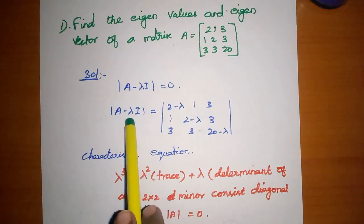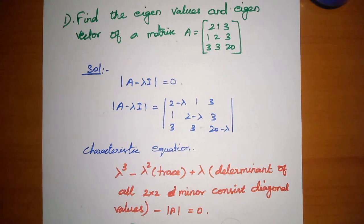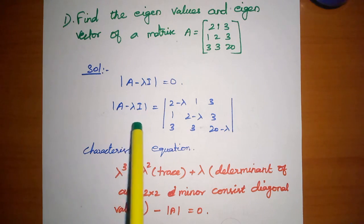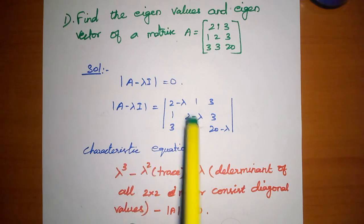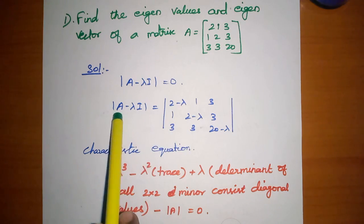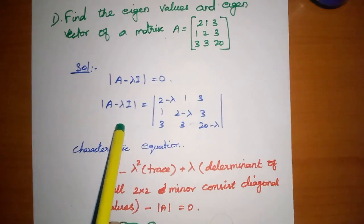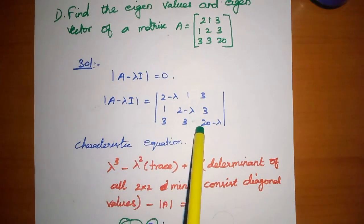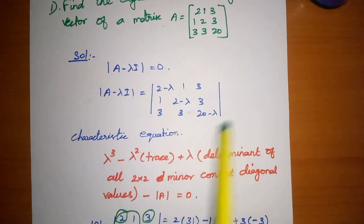A minus lambda I equal to zero. Here I is the identity matrix. Lambda is substituted and multiplied. In the lambda I matrix, the diagonal elements get lambda added, and the remaining elements are zero. So in the given matrix, each diagonal element becomes that element minus lambda.